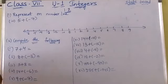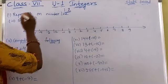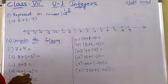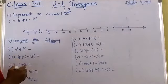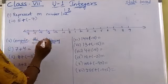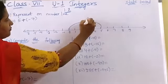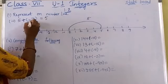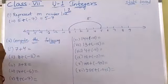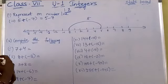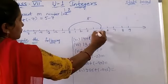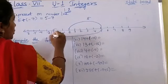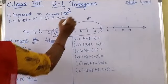Coming to exercise 1.2 — the first part asks you to represent on the number line. Take 5 plus of minus 7: plus into minus gives minus 7, so you are subtracting 7. Start at 0 to 5 on the number line, then move left 7 places: 1, 2, 3, 4, 5, 6, 7. The answer is minus 2.